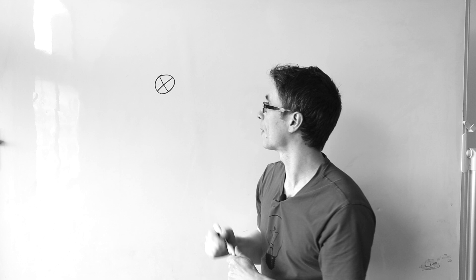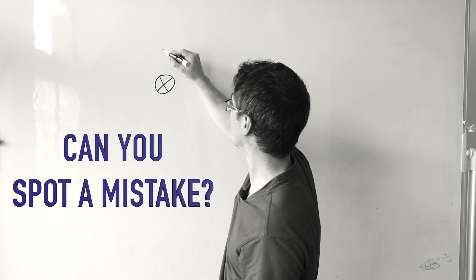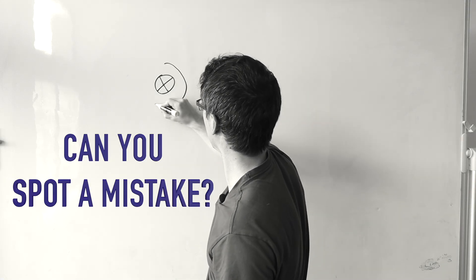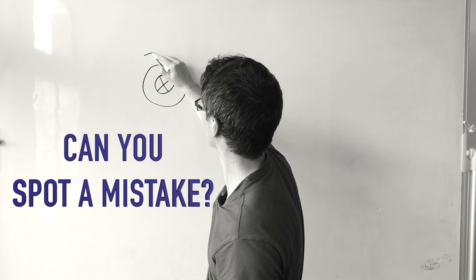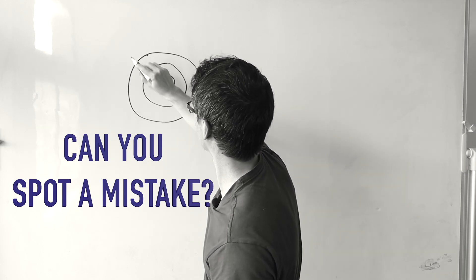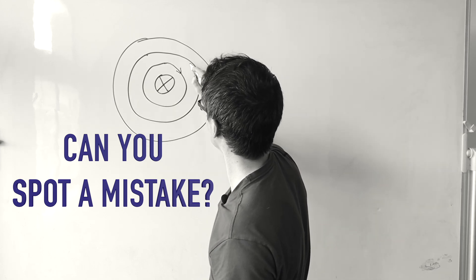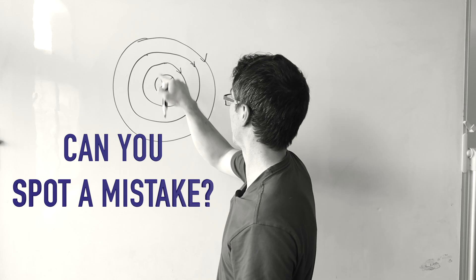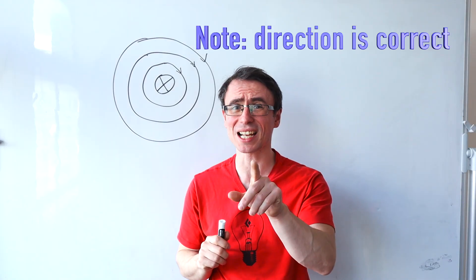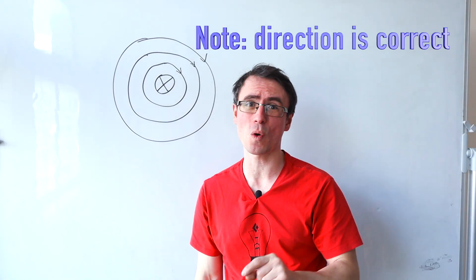I will first show you what not to do. So this means that I'm going to have concentric circles around it like this, and the direction will be in this way. This is actually wrong and will not score two out of two.